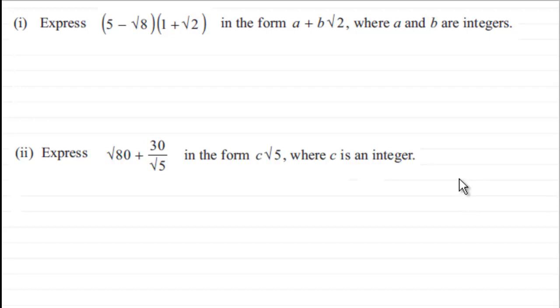Okay, welcome back if you had a go. So let's see how you got on. With the first part, we've got to express 5 minus root 8, all multiplied by 1 plus root 2, in the form a plus b root 2, where a and b are integers. So to do something like this, what I first want to do is make sure that I've got an intro, just copy the question out.